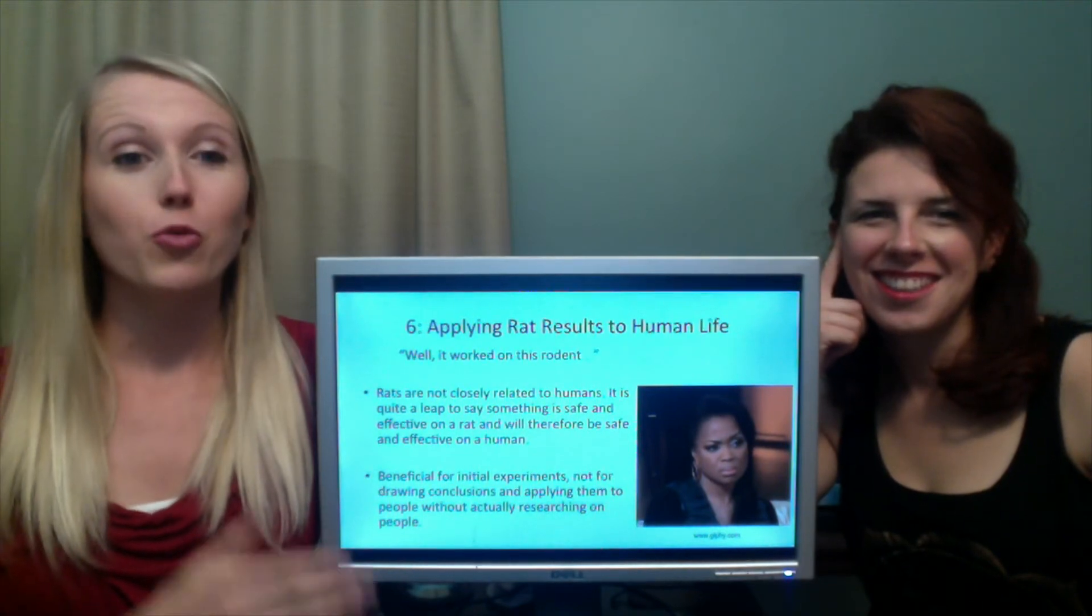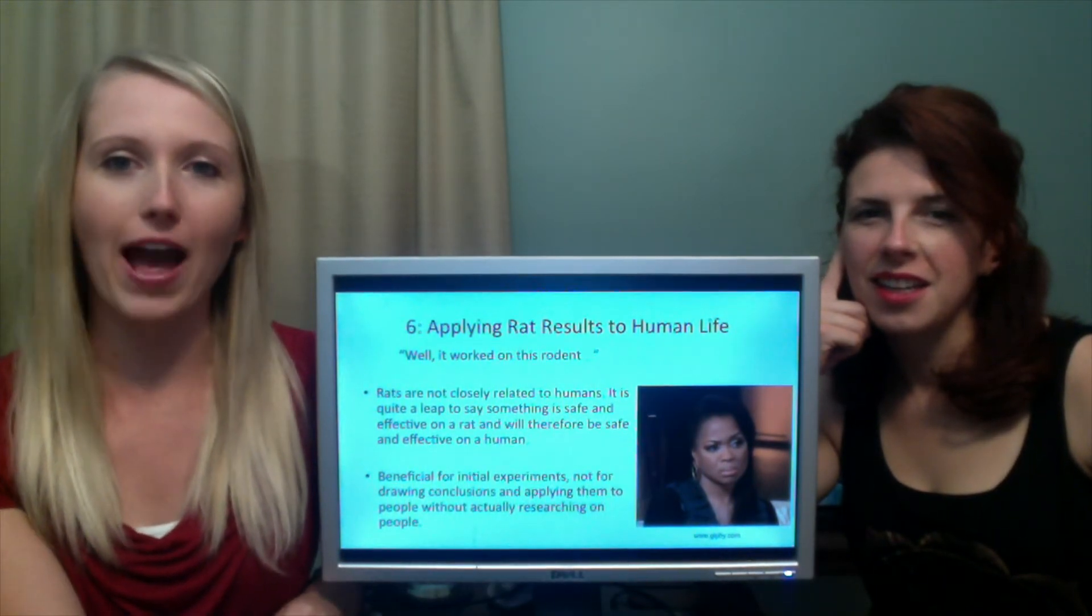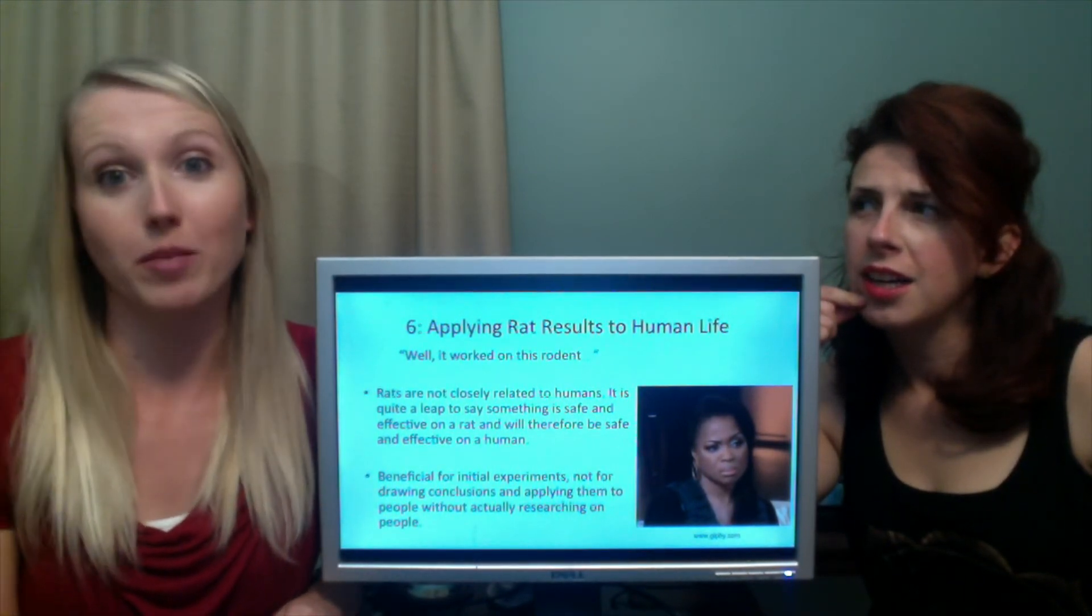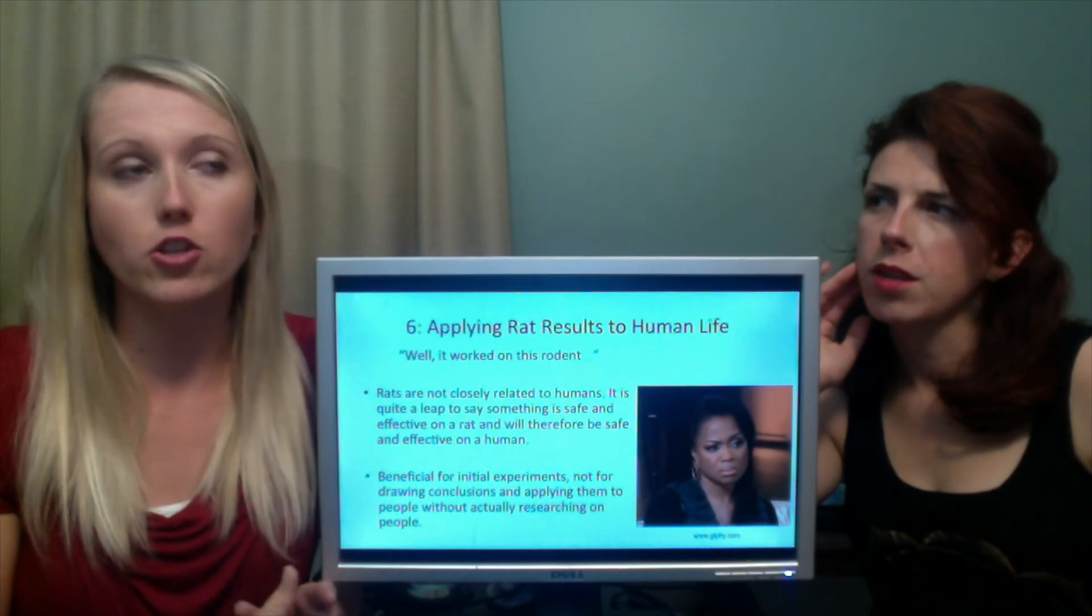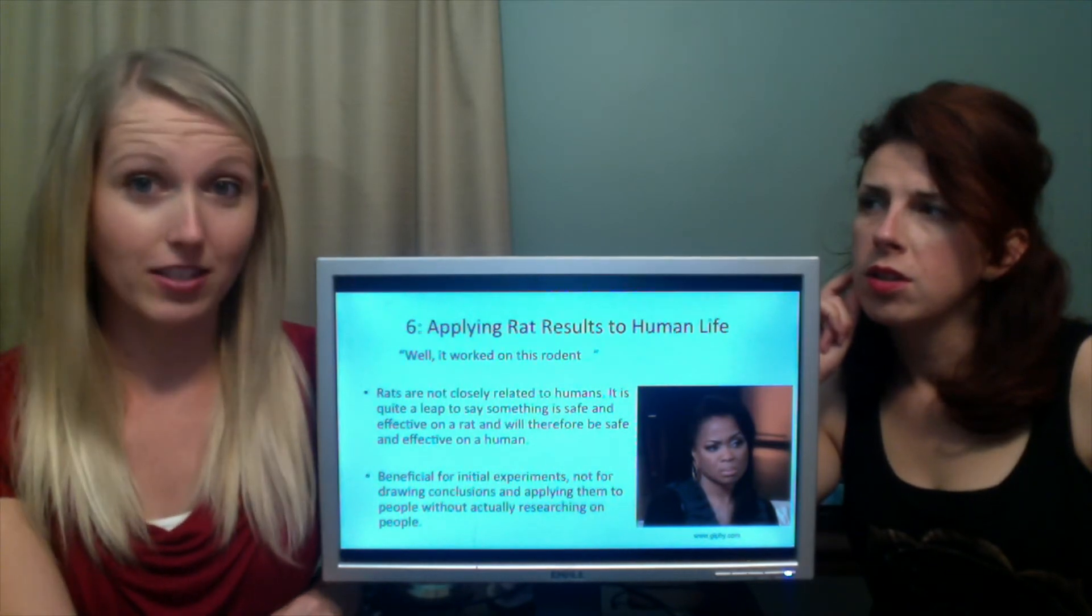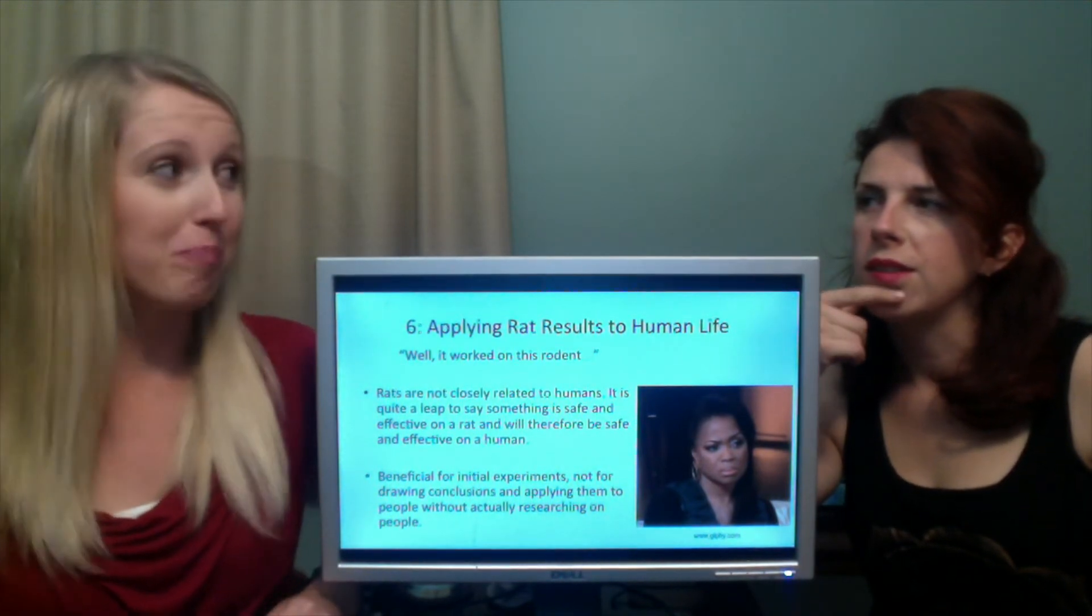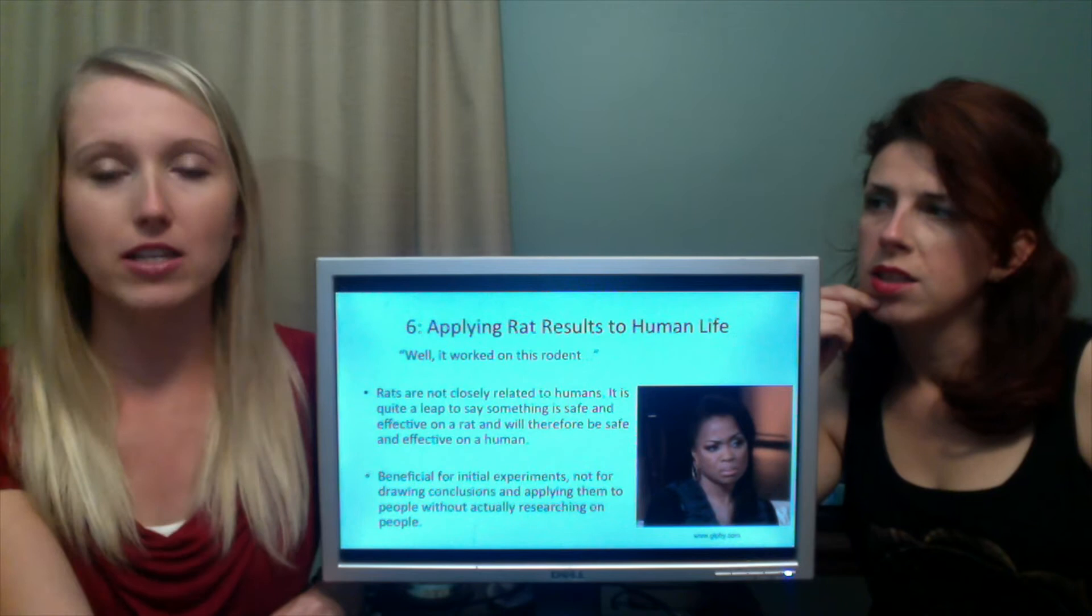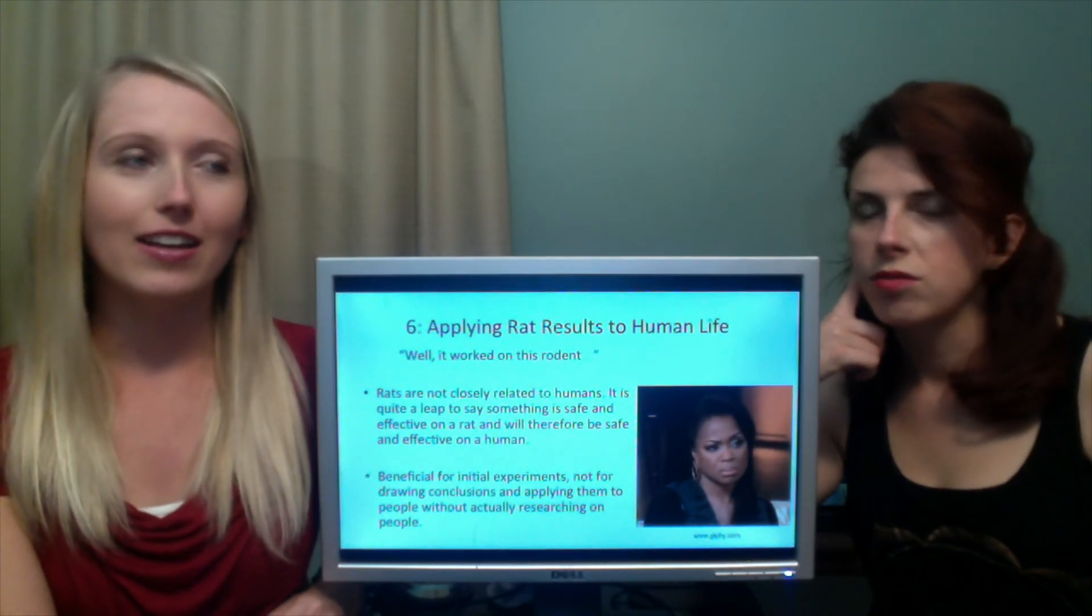There are certain studies, like studies on the brain. The way the brain functions can be similar from species to species. But there are some studies that literally look at the digestive system of rats and determine what diet we should eat based on a rat. Do you want to base your diet on a rat? If I eat an onion, that's great for me. Onions are so healthy for people. If my dog eats an onion, he's going to die because it's toxic. So why am I going to base my diet off of a rat? It's ridiculous.